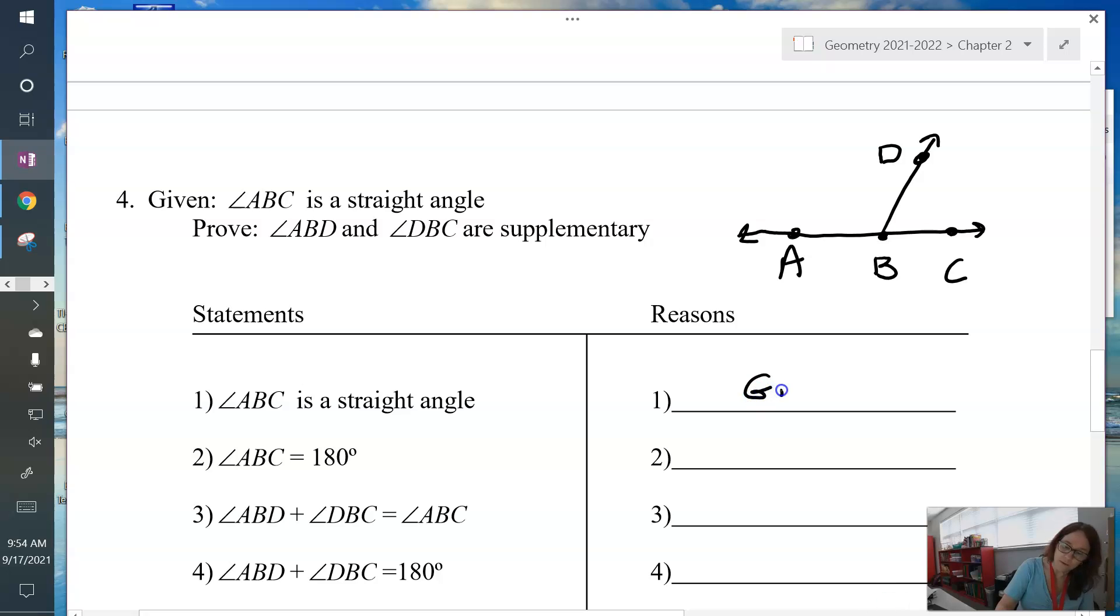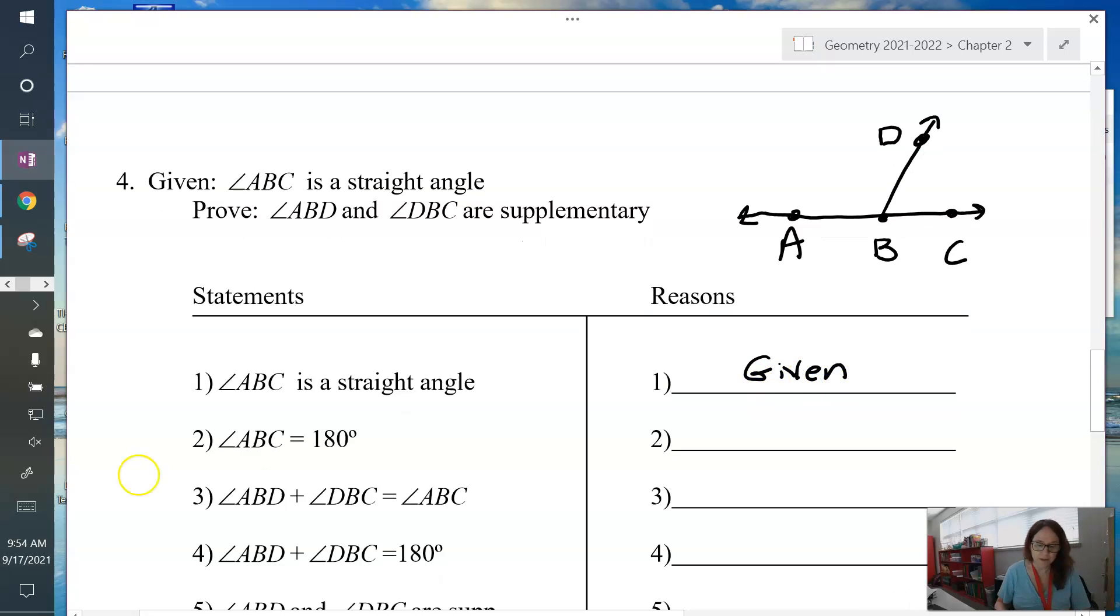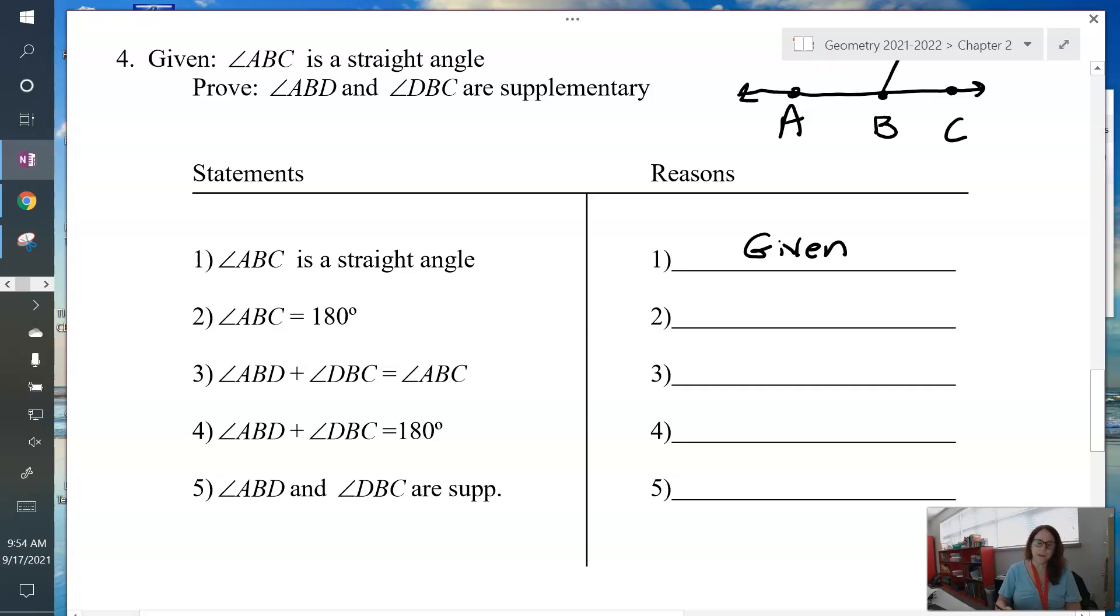Angle ABC is a straight angle. Always, always, always start with given. So the first thing we're going to write is given. And then we said angle ABC equals 180 degrees. Check it out, we've got a vocab word, straight angle. So you should be thinking definition of straight angle. And then it says ABD plus DBC equals angle ABC. Isn't this just like what we did in our last example? We're adding angles together, so this is angle addition postulate.